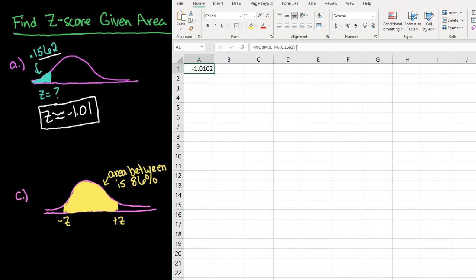So if we just select on the inverse norm again, if you want, you can just keep working with this. And we would just do 1 minus 0.1762. Okay, and then when you hit enter, it does give you your z-score.